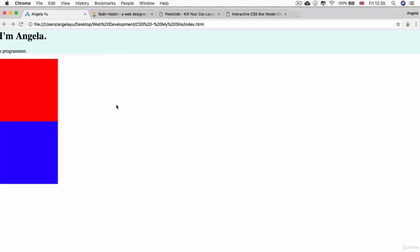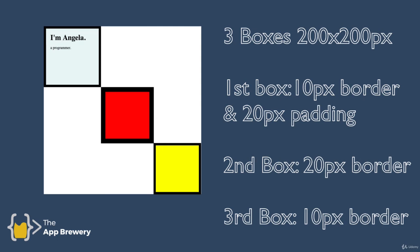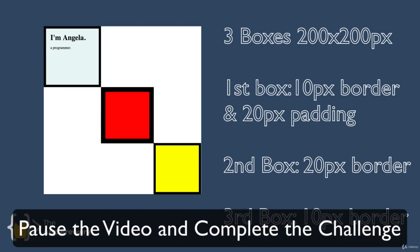Once you've done that, I've got a challenge for you. Use the Chrome developer tools — don't edit styles inside the editor, just make temporary changes — to adjust the margins, borders, and paddings. The height and width of the divs should stay the same. I want you to create a design where the first box is right at the top-left edge of the page, the two other boxes touch corner to corner, the second has a 20-pixel border, the third has a 10-pixel border, and you can change the colors to match. The corners must touch, using a combination of margins, padding, and border to achieve this design. Pause the video and give it a go.